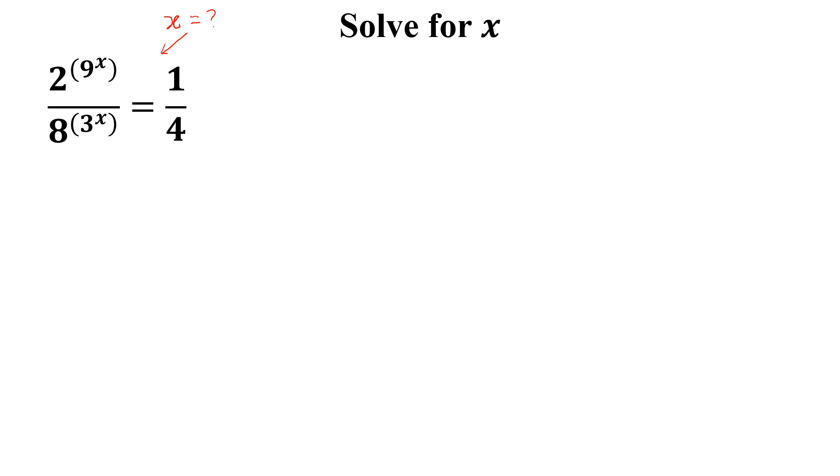How can we solve this? We can write 2^(9^x) as 2^(3^(2x)) divided by 2^(3^(3x)) equal to 1 over 2^2.